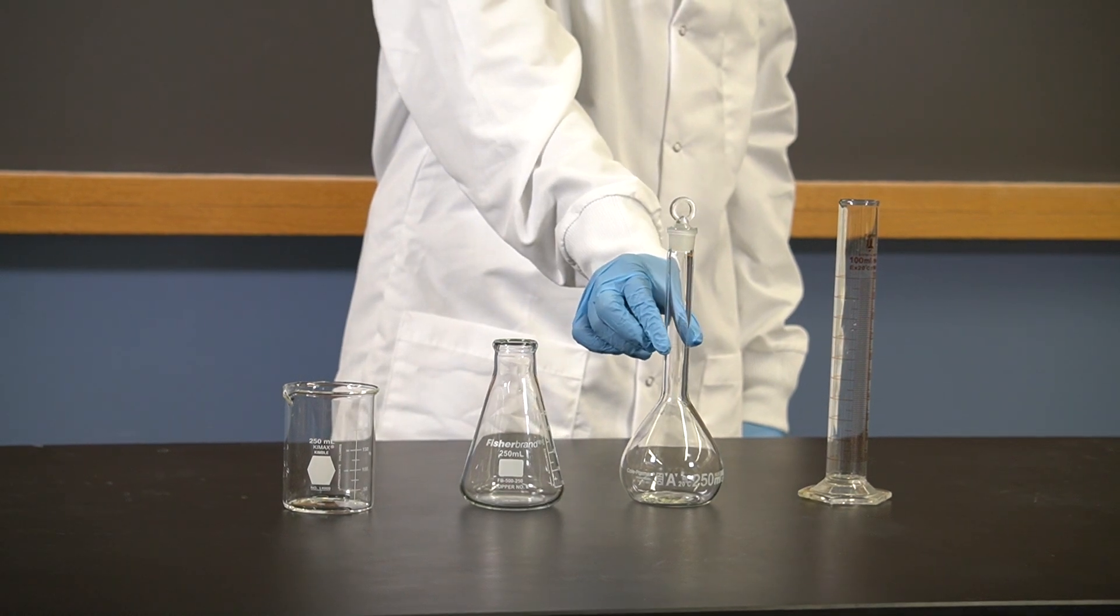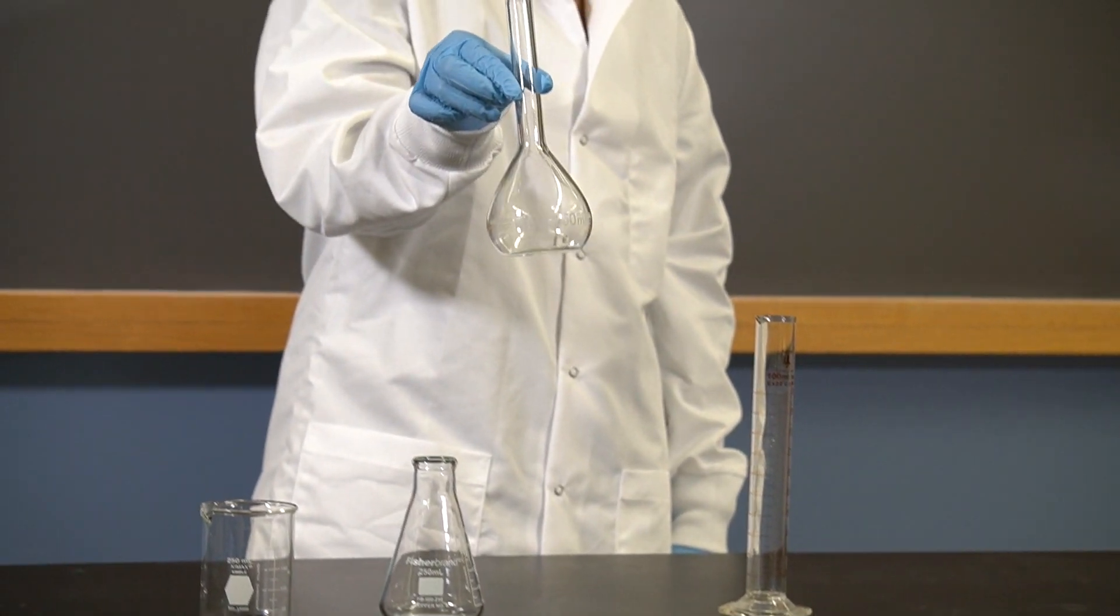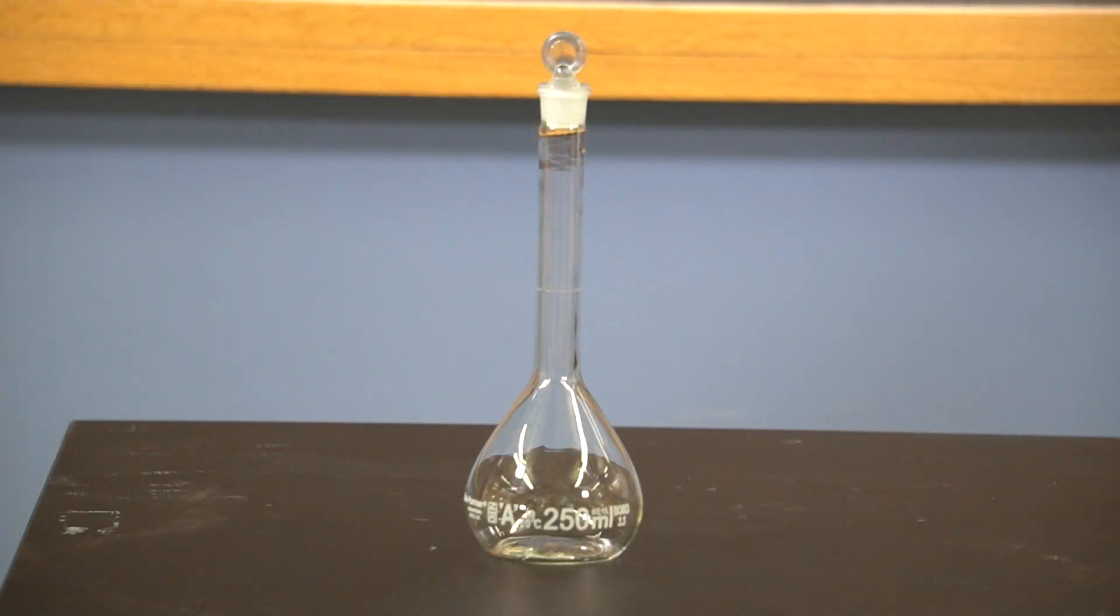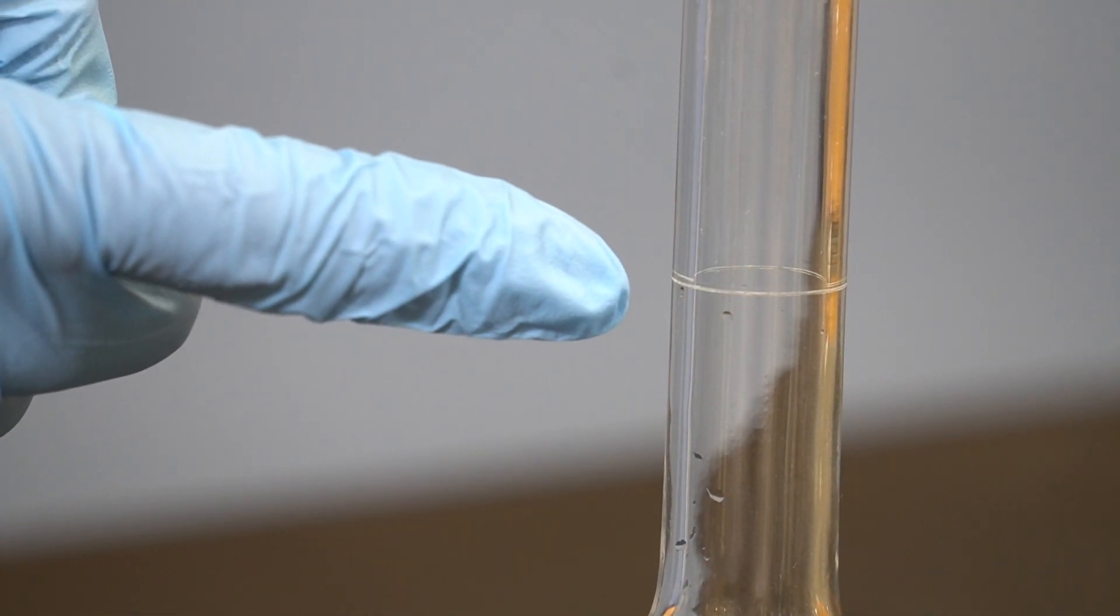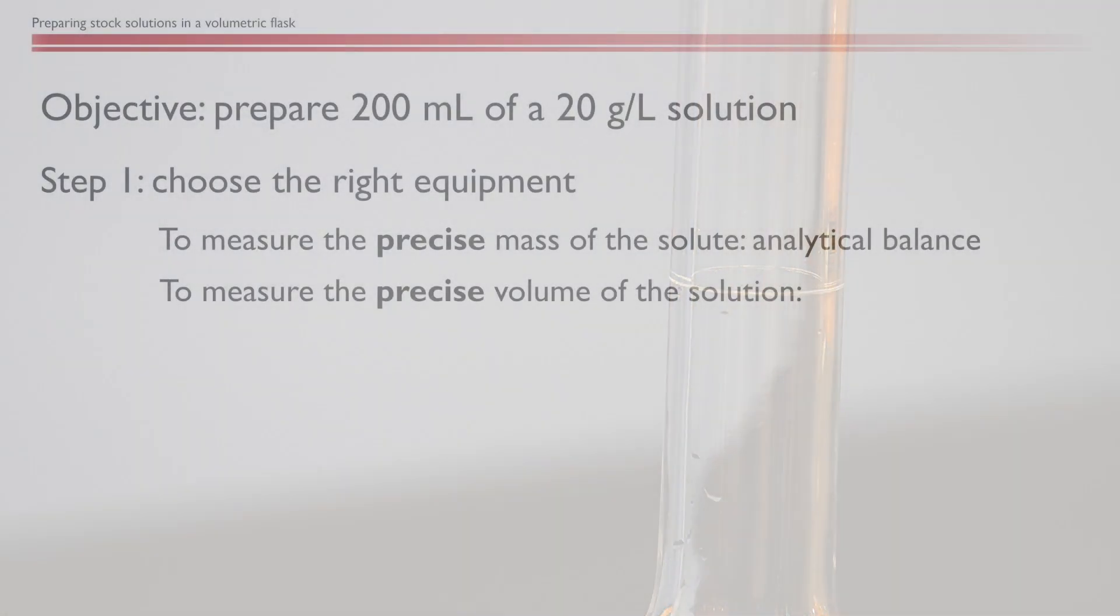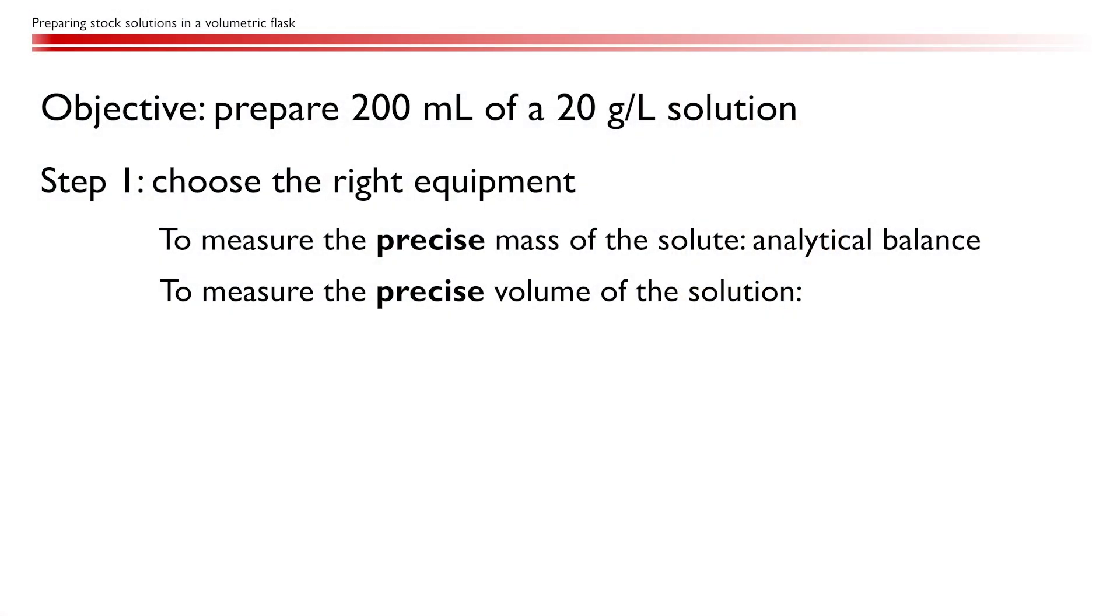The best choice of glassware is the volumetric flask. Unlike beakers and Erlenmeyer flasks, which have large necks and are not well calibrated, the narrow neck of the volumetric flask allows us to make very precise solutions. Any given volumetric flask is only calibrated to a single volume, marked by a single calibration line on the neck of the flask. Therefore, any time a solution needs to be prepared with an accurate volume, it should always be made in a volumetric flask.